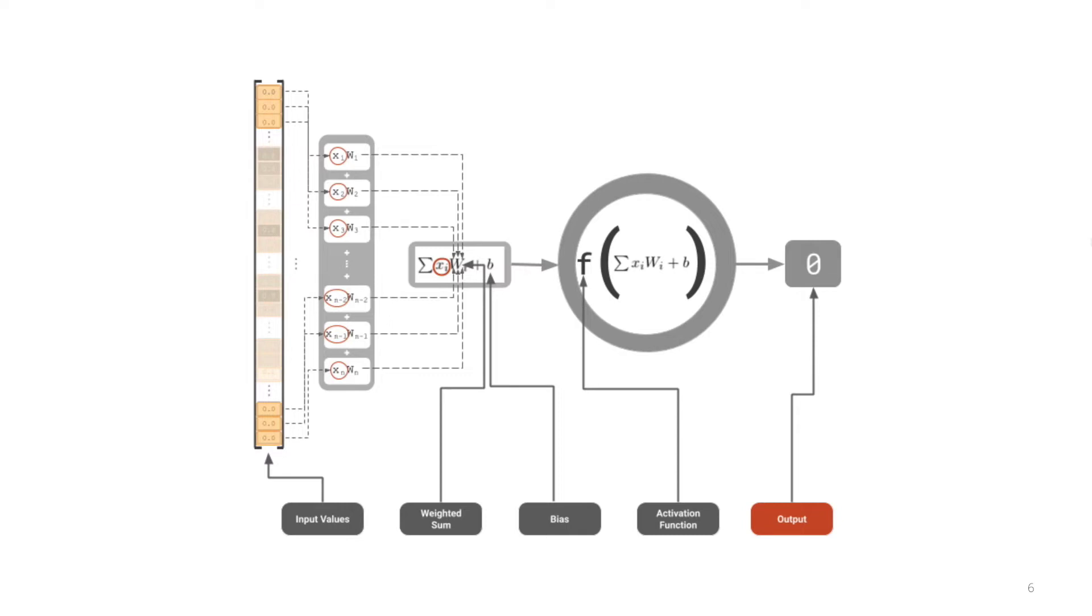Each weight that we apply to the input is representative of just how important each feature is in the calculation of the results. The bias term that we add allows us to shift the decision boundary up or down accordingly.